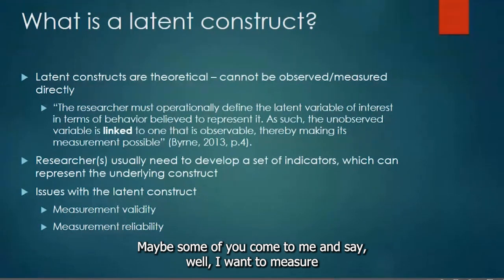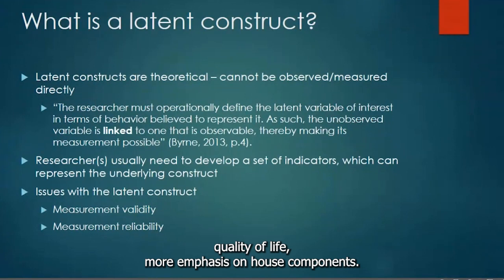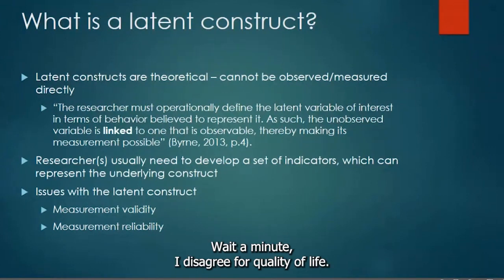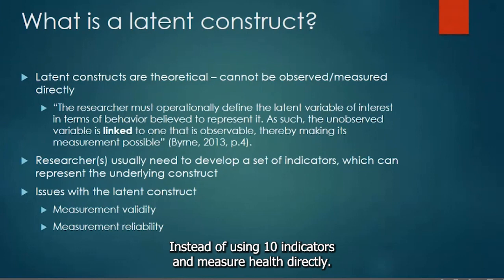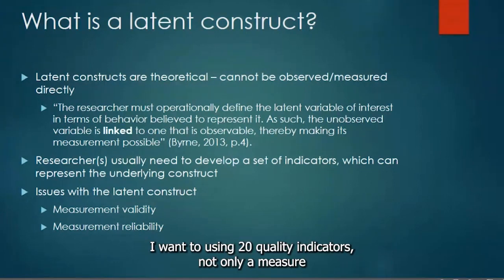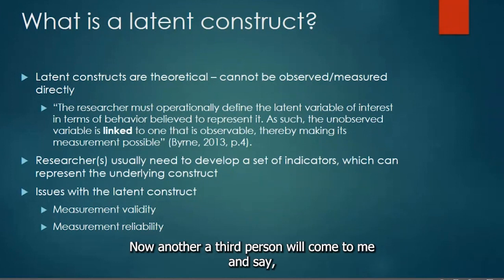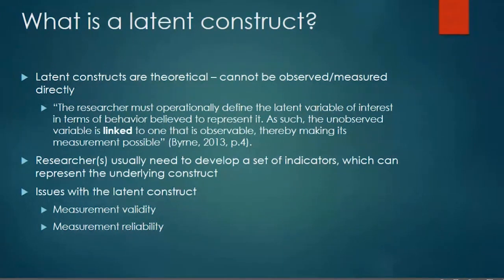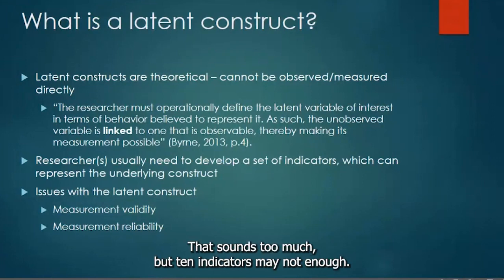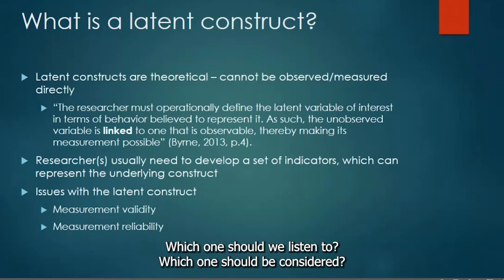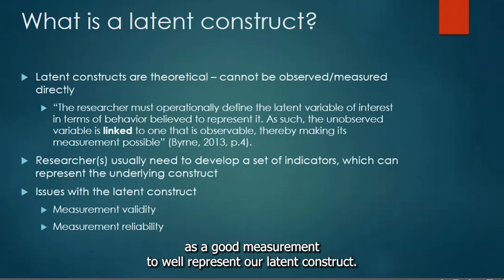Someone might say they want to measure quality of life with more emphasis on health components. Then another person might disagree and say: instead of using 10 indicators measuring health directly, they want 20 indicators — measuring not only health but also social life. A third person might say 20 is too many but 10 is not enough, so they'd use 15 indicators instead. With these three different sets of indicators, who should we listen to? What can we consider a good measurement to represent our latent construct?